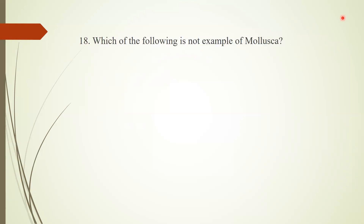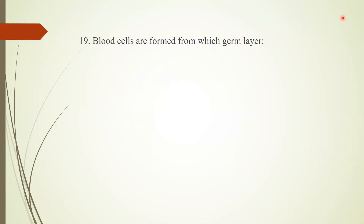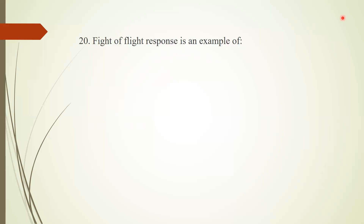Question 18: Which of the following is not an example of phylum Mollusca? The options provided indicate the answer is the one not included in phylum Mollusca. Question 19: Blood cells are formed from which germ layer? Answer: mesoderm. Question 20: Fight or flight response is an example of the sympathetic nervous system.